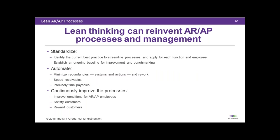Let's go back to first principles — the same thing everybody on this call would do in any other area. Three core principles: First, standardize — figure out the current best practices, establish a baseline benchmark for acceptable defect rate and processing speed. Next, automate — minimize redundancies, speed receivables, precisely time payables to capture discounts and avoid penalties. Then continuously improve — how do you satisfy your customers and make this not a cash flow drain but a cash flow opportunity for your firm?